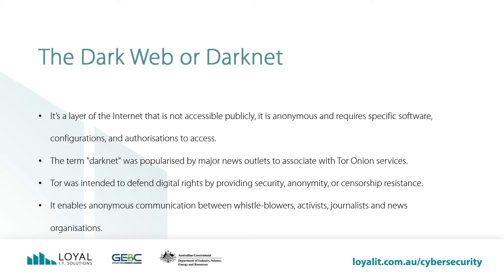The dark web or dark net — as mentioned at the top of this video — is a layer of the internet that is not accessible publicly. It is anonymous and requires specific software, configurations, and authorizations to access. The term dark net was popularized by major news outlets to associate with Tor Onion services. Technologies such as Tor, I2P, and Freenet were intended to defend digital rights by providing security, anonymity, or censorship resistance, and is used for both illegal and legitimate reasons. It also enables anonymous communication between whistleblowers, activists, journalists, and news organizations.